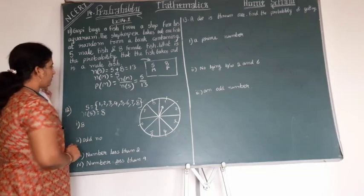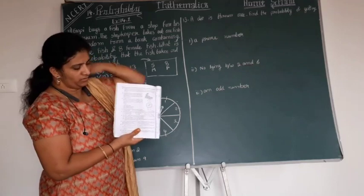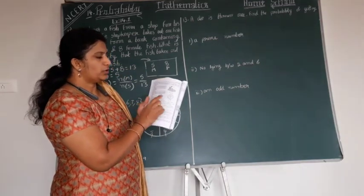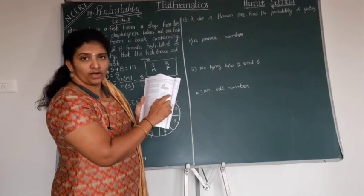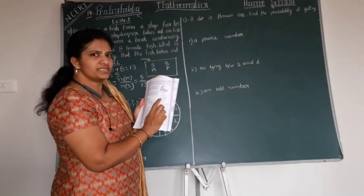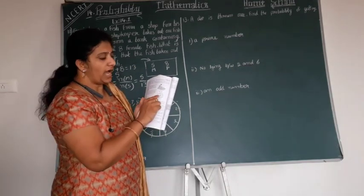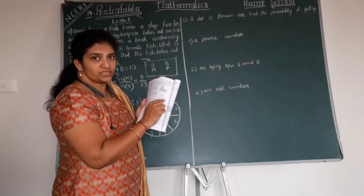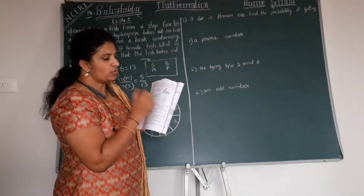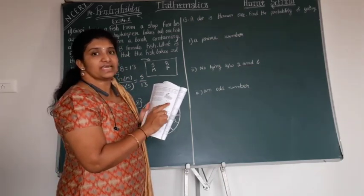And next is the 12th problem. I am going to read the 12th problem from your NCERT textbook. Again, can you see here a small round spinning wheel? This is called a spinning wheel. You might have seen it in some sports. If you press a button, the arrow rotates and it will stop at some position.